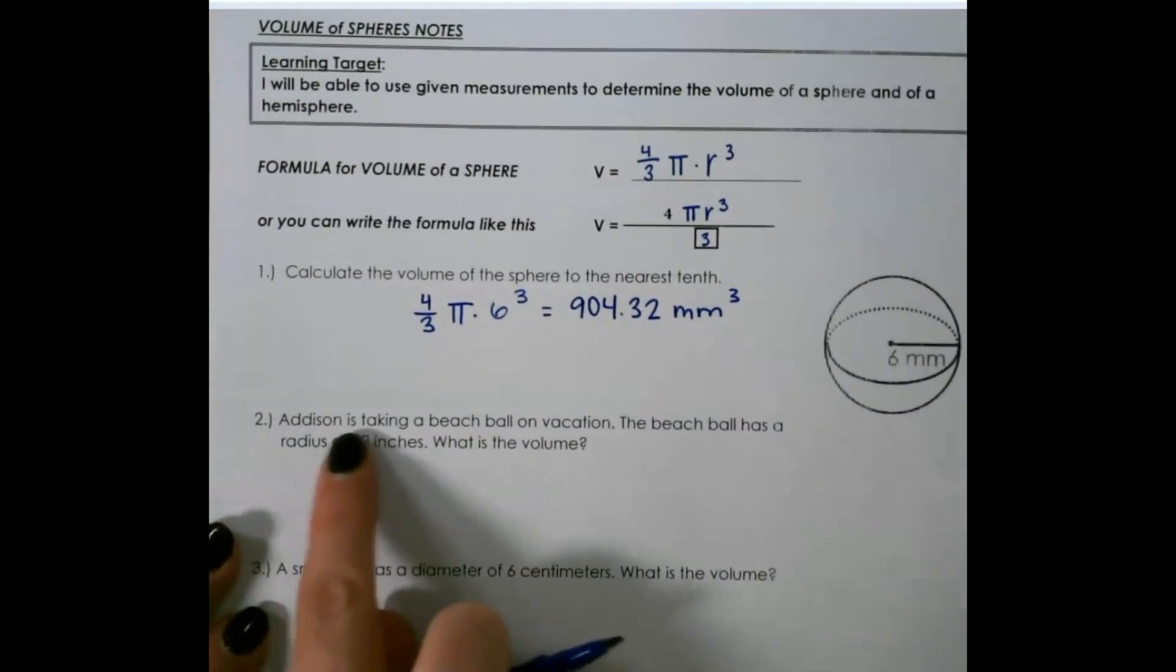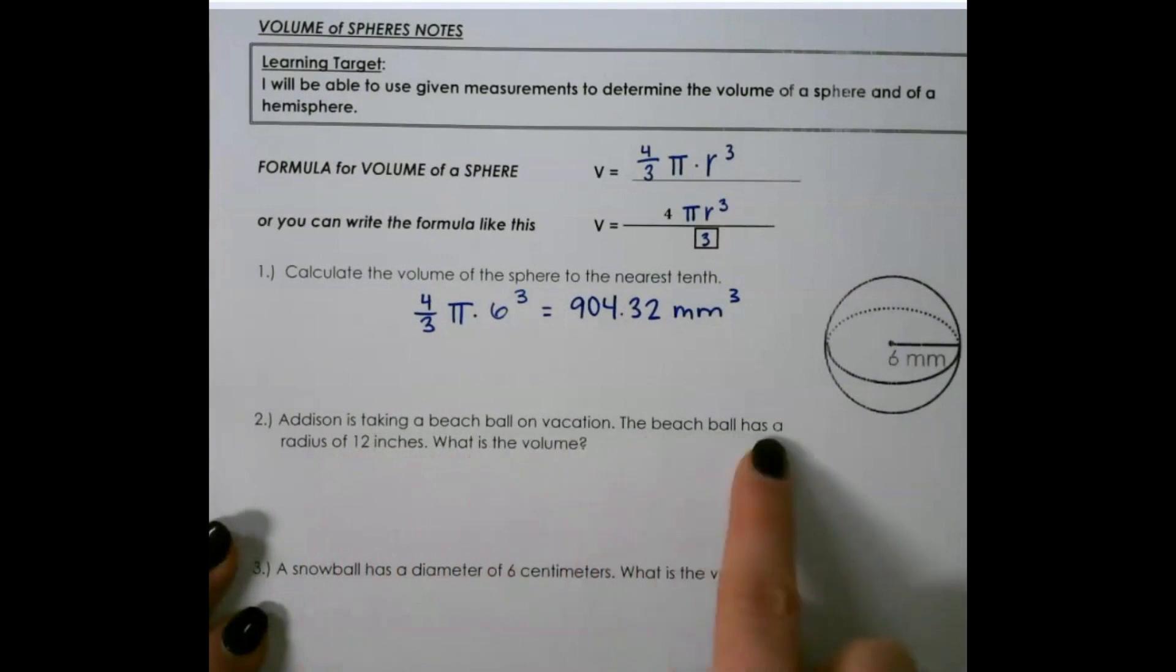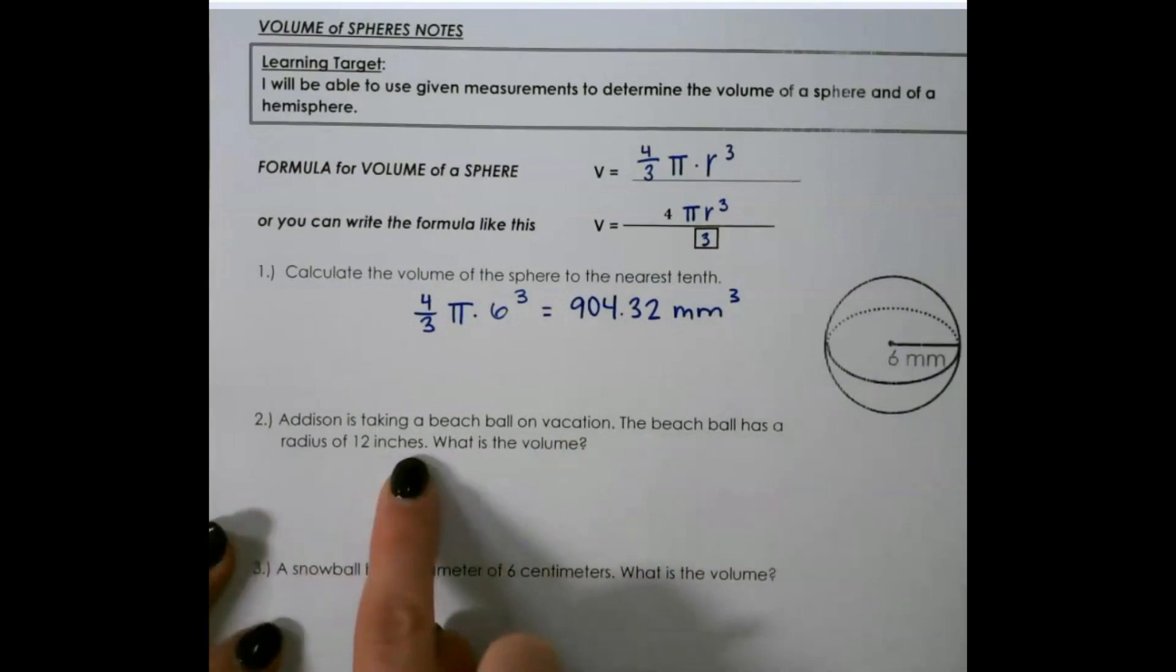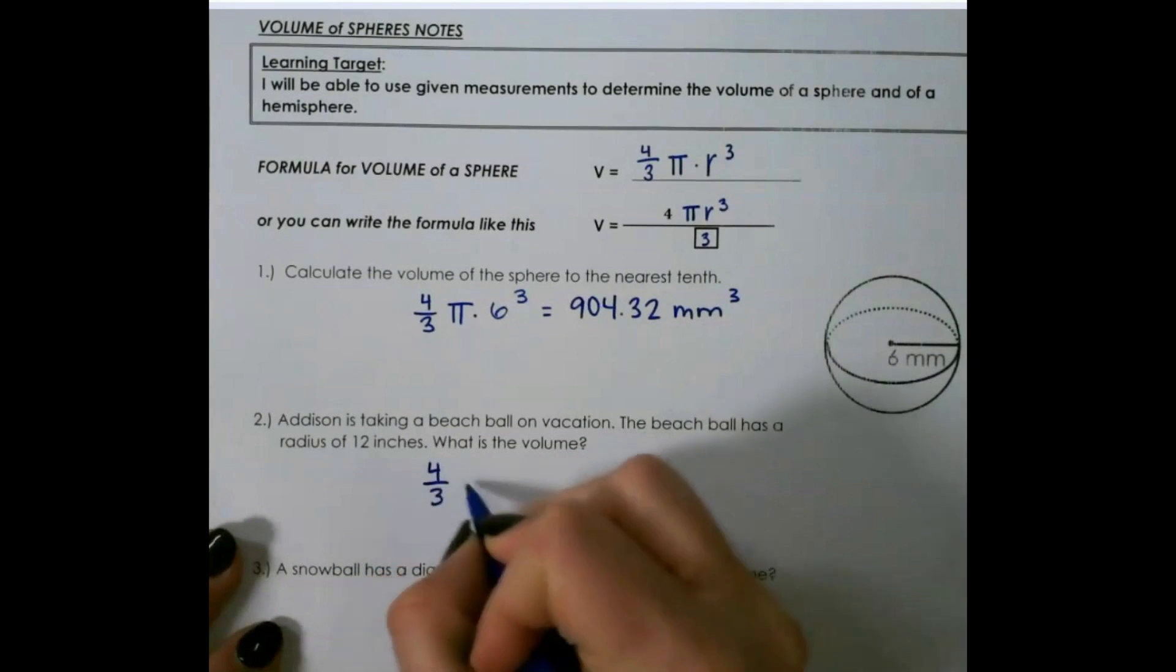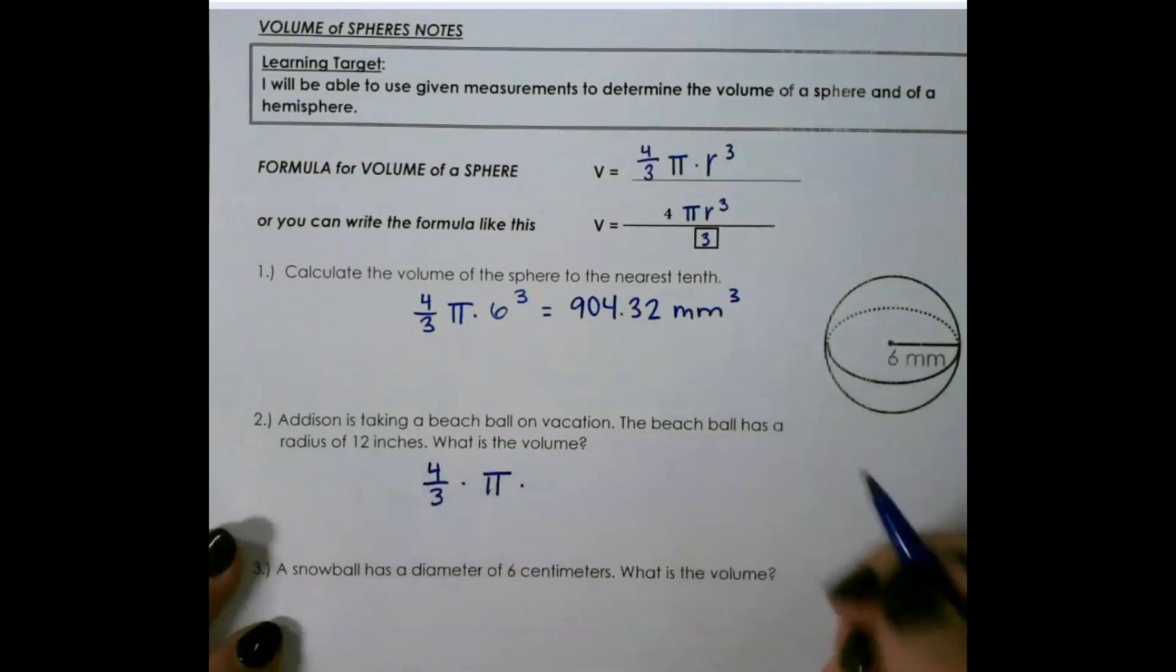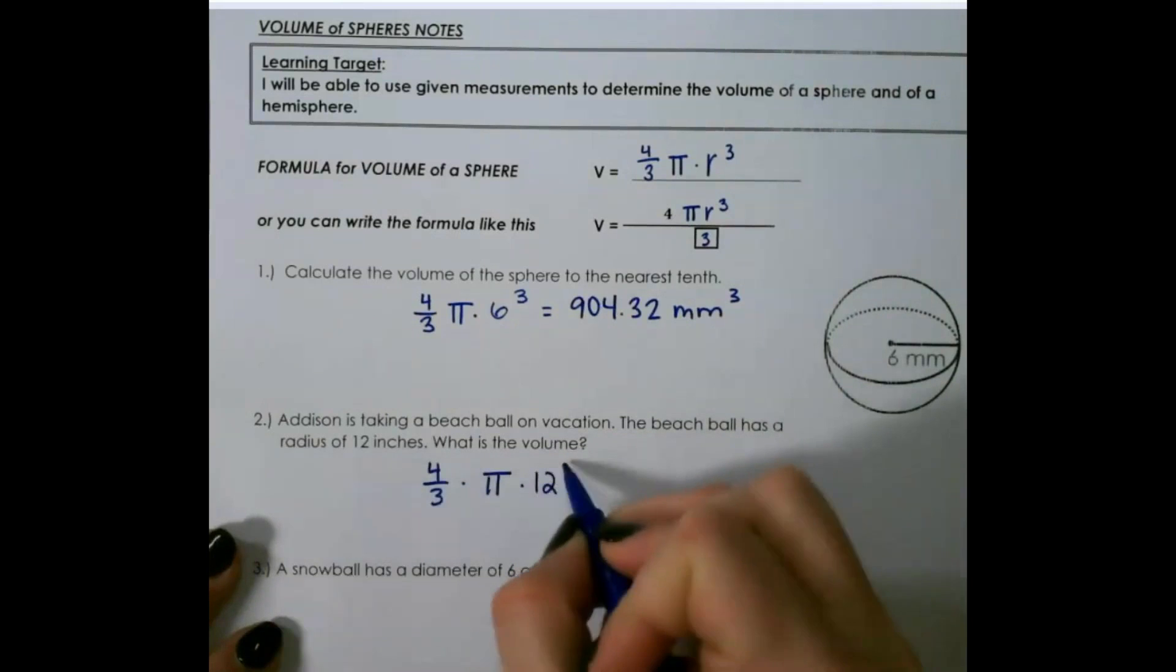For the next one, Addison is taking a beach ball on vacation. The beach ball has a radius of 12 inches. What is the volume? So four-thirds times pi times r, which was 12, cubed.